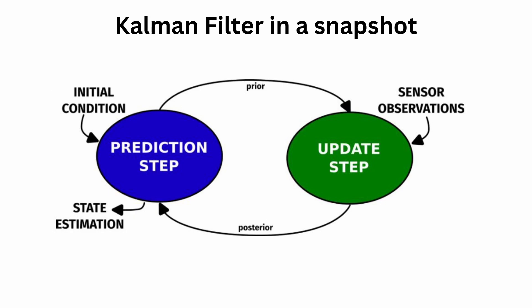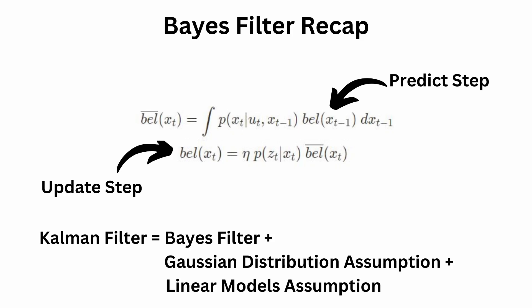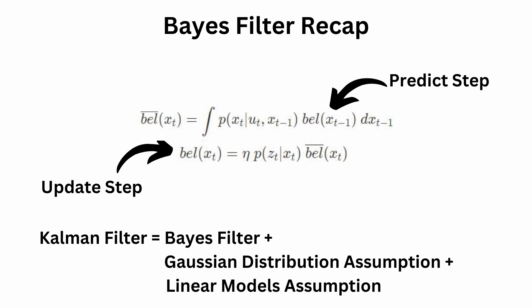Now that we have a more visual understanding of the Kalman filter, let's get into the formal equations. In the previous part, we derived both predict and update equations for the Bayes filter. For a final trick, we see how introducing two assumptions leads to further solving the Bayes filter equations and turning them into the Kalman filter equations. The Kalman filter equals the Bayes filter plus the assumption that all distributions are Gaussian and all models — your motion model and observation model — are linear or linearized.